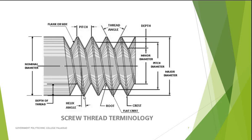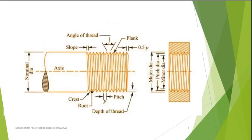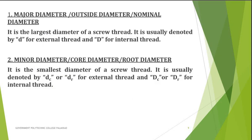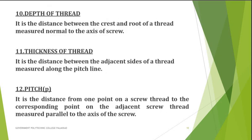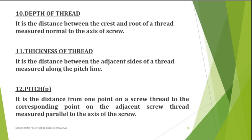Another term is depth of thread. It is the distance between the crest and root of a thread measured normal to the axis of the screw. Thickness of the thread is the distance between the adjacent sides of a thread measured along the pitch line.